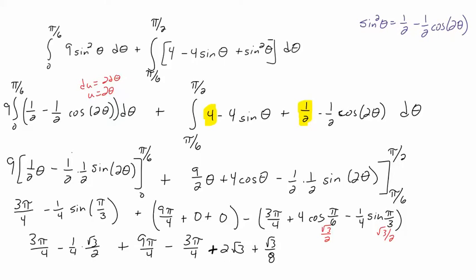I missed distributing the negative, so let me correct that — those signs should be negative, negative, positive. Also checking: did I distribute the 9 there? Yes, that should be 9 over 4. Let me also double-check the distributing of the negative sign throughout.